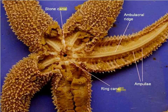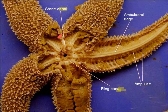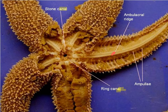Here we have the starfish dissected open. We have the stone canal, and the stone canal would be attached to the madreporite. So we would go madreporite, stone canal leading down, ring canal, and then move out through the radial canals. From the radial canals, we would have our ampulla and our tube feet.